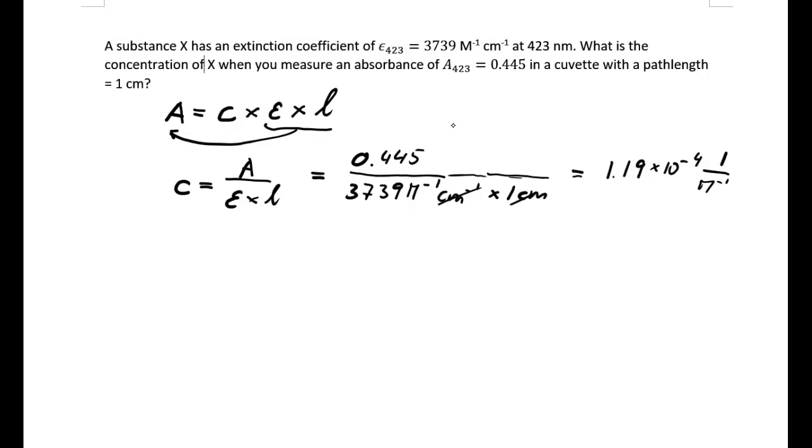And 1 over molar to the minus one would be the same as 1.19 times 10 to the minus 4 molar, or mole per liter.